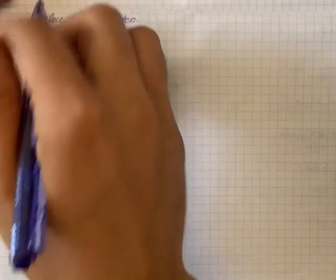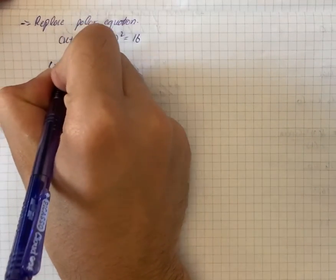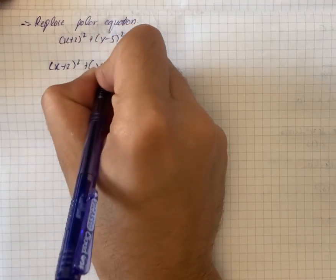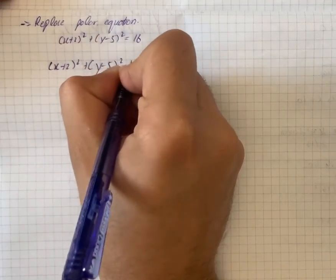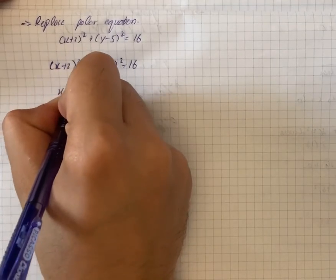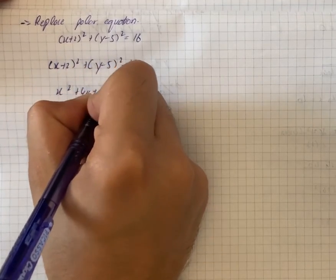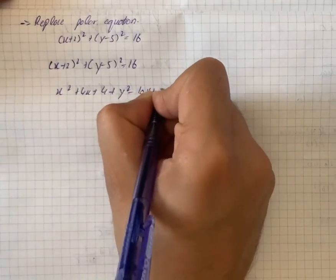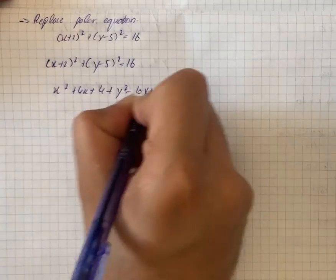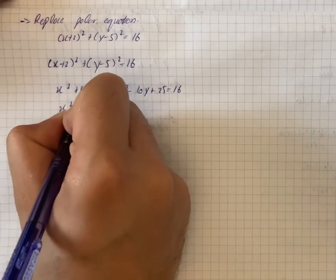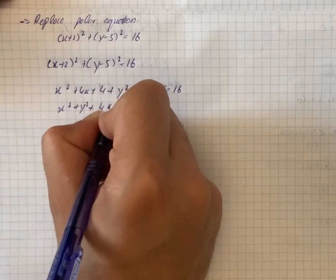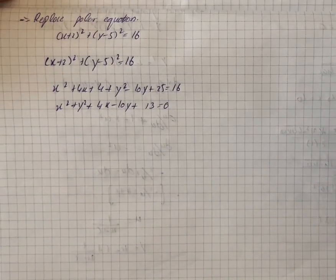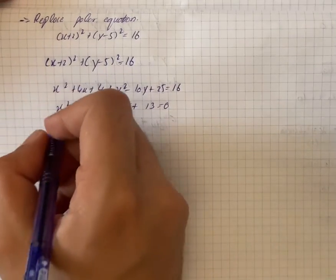Here we have to replace the polar equation, so we write (x + 2)² + (y - 5)² = 16. Expanding: x² + 4x + 4 + y² - 10y + 25 = 16. Simplifying, we write x² + y² + 4x - 10y + 13 = 0. We will now convert this equation into polar form using standard substitutions.